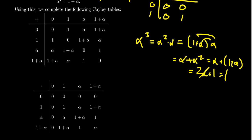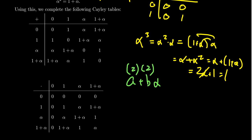The four elements are: 0, 1, α, and 1+α. For a+bα you have two options for a and two options for b — two times two equals four — giving exactly these four possibilities.